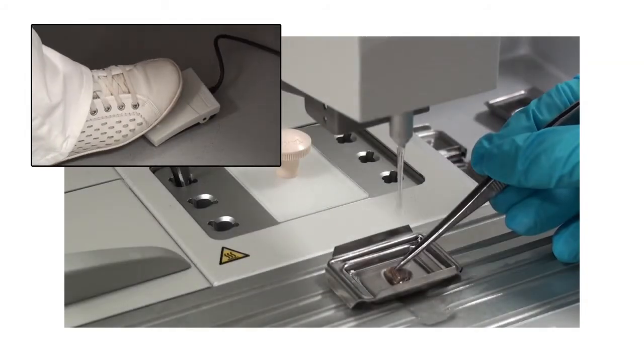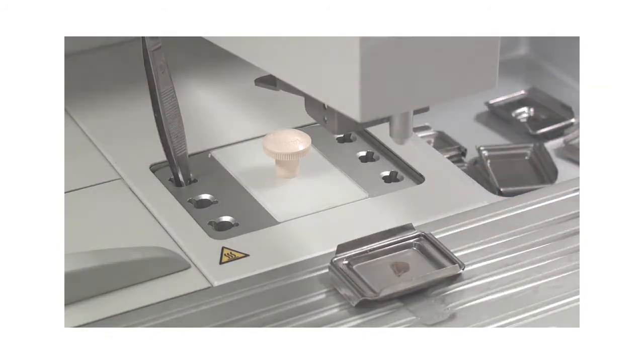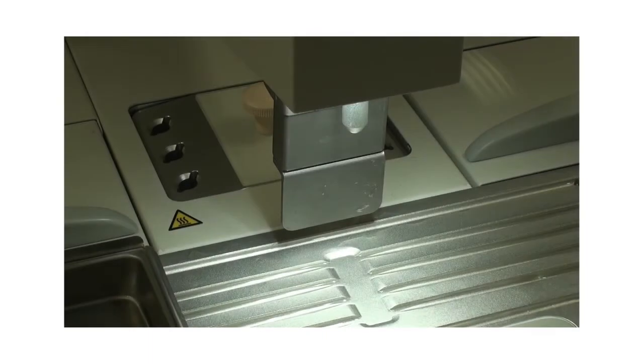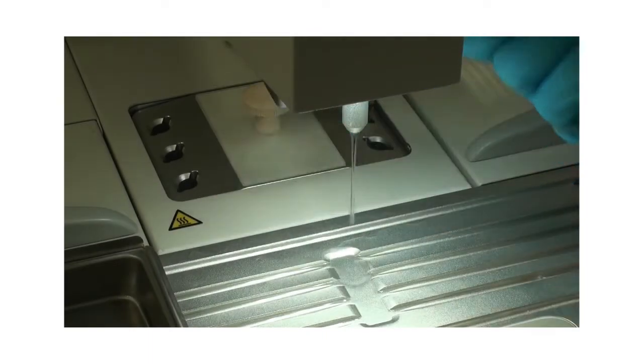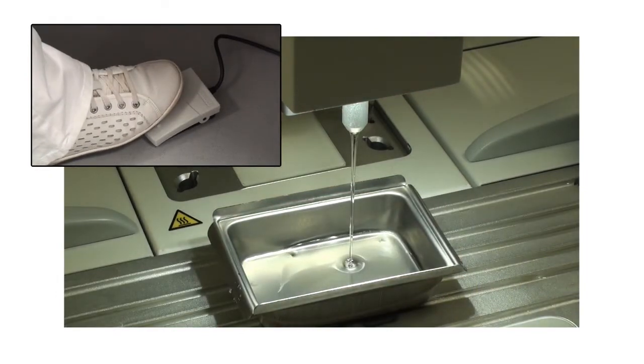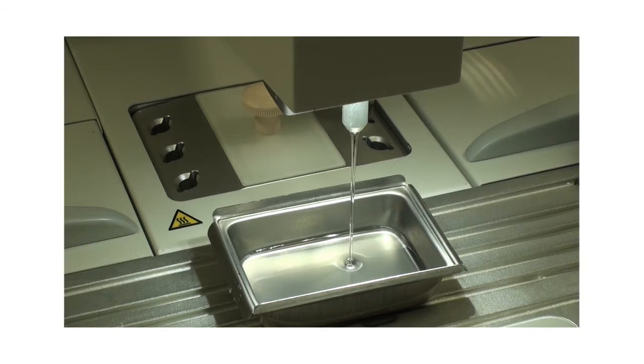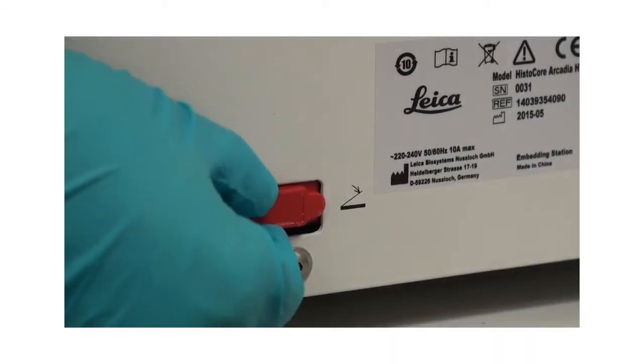The foot switch is an optional accessory that can be used to activate the dispenser valve, leaving the operator's hands free. If more space is needed to fill larger cassettes, the pressure clip can be folded backwards, and the paraffin flow activated via the foot switch. To connect the foot switch, insert the plug into the connecting port on the rear of the instrument and tighten the screws.